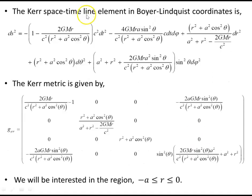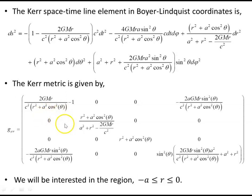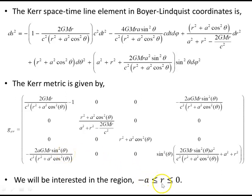The Kerr spacetime line element in Boyer–Lindquist coordinates is given by this expression. I've written it out in full without using ρ or Δ, where ρ² = r² + a²cos²θ. We're going to be interested in the region of the ring singularity, so we're going to be looking at values of r from minus a to zero.